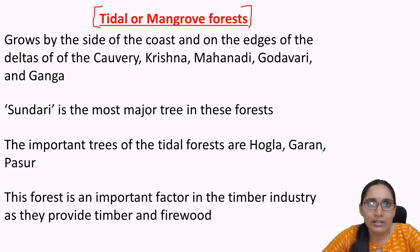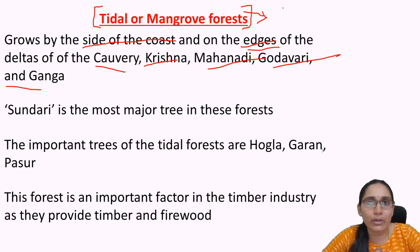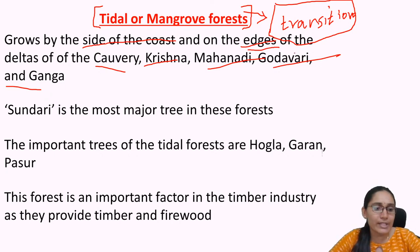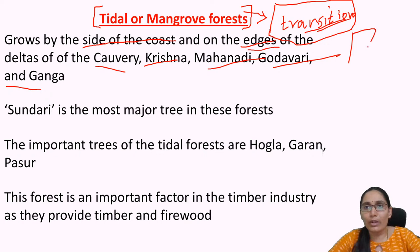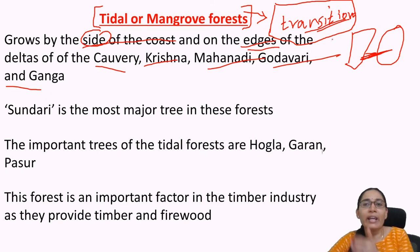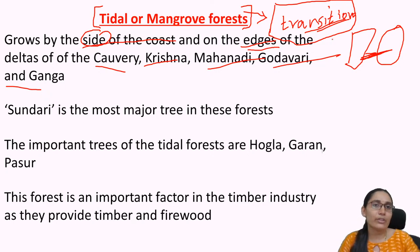Now we have the tidal or mangrove forest. It grows by the side of the coast and on the edges of the deltas of the Kaveri, Krishna, Mahanadi, Godavari, and Ganga. Mangrove vegetation is found in the transition zone — the transition from terrestrial to aquatic ecosystem. It is found mainly where the terrestrial and aquatic ecosystems meet.